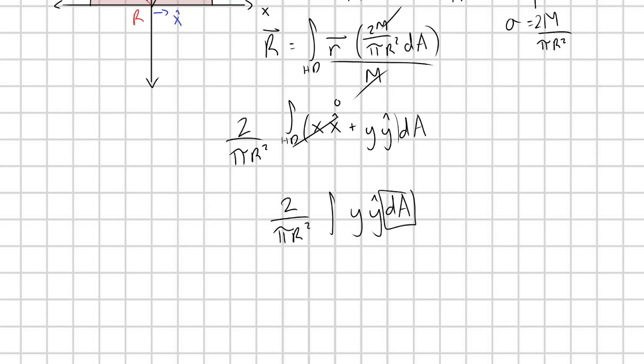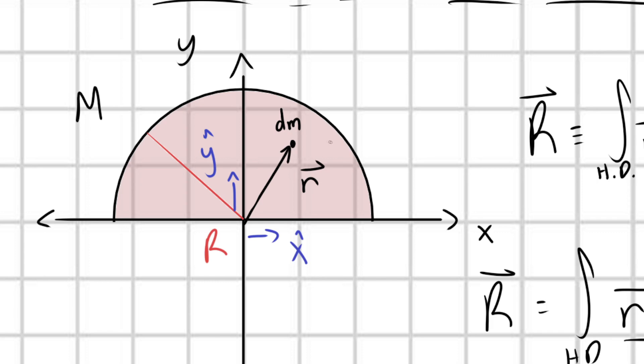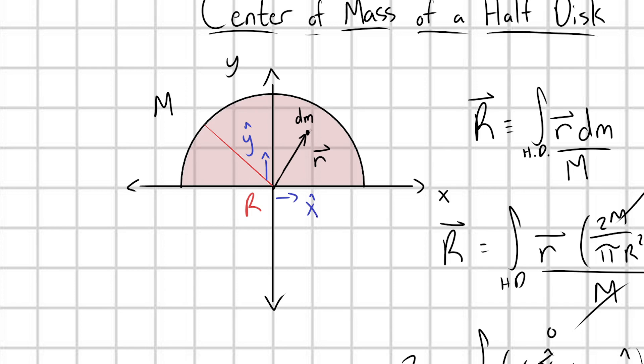So what is dA? Each of our infinitesimal mass elements is going to occupy some infinitesimal area element dA. And depending on what coordinate system we choose, we have to pick an appropriate dA. So what coordinate system should we choose to deal with this disk? And the answer is polar coordinates. That would be a really smart choice. So in polar coordinates, an area element dA is equal to r dr d phi, where r would be the radial distance from the origin to your point of interest, and phi would be the angle that that radius makes with the x axis here.